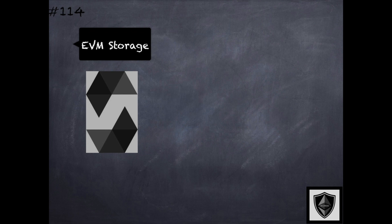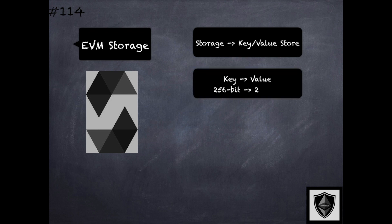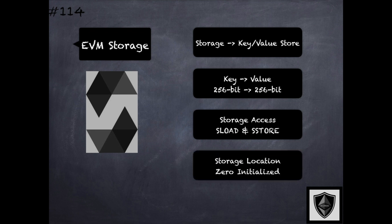Let's revisit the concept of EVM storage and see how some of the Solidity concepts map to this storage. Storage is a key-value store that maps 256-bit words to 256-bit words. The instructions used to access the storage are sload, to load from storage, and sstore, to write to storage from the stack. All locations in storage are initialized to zero.